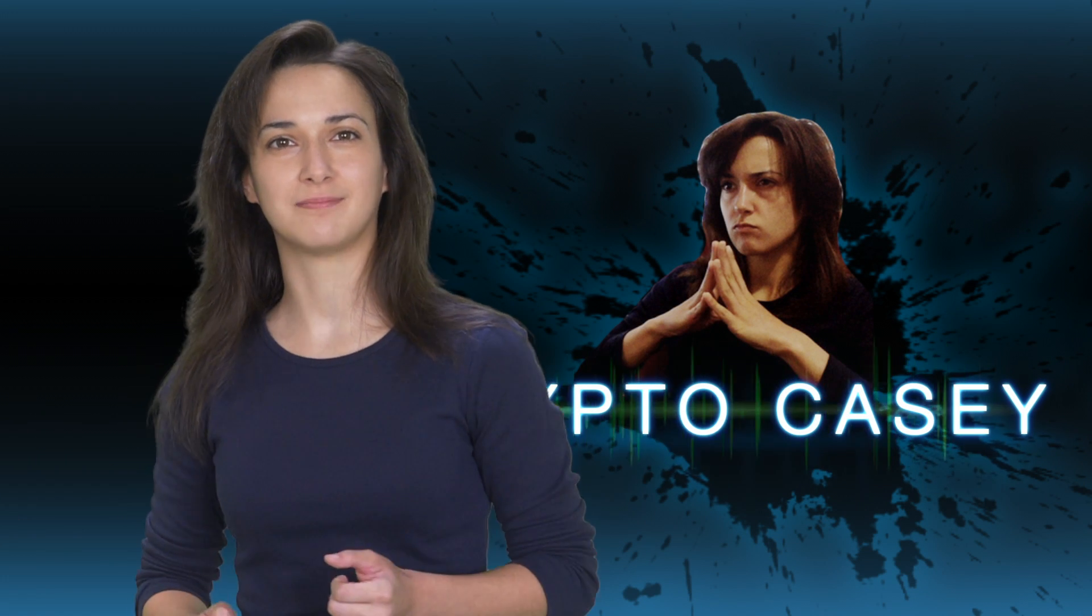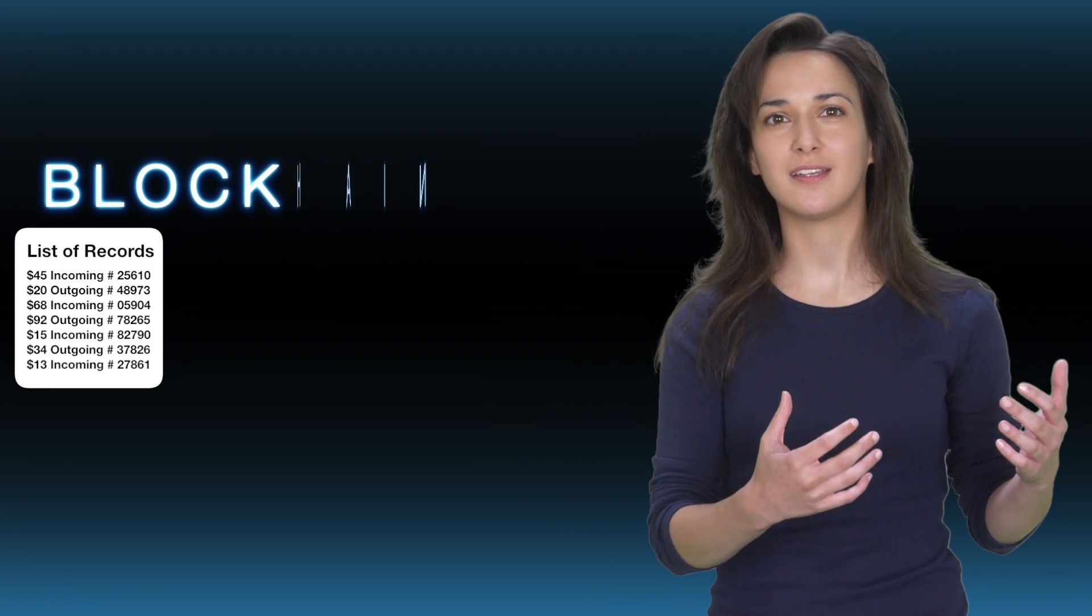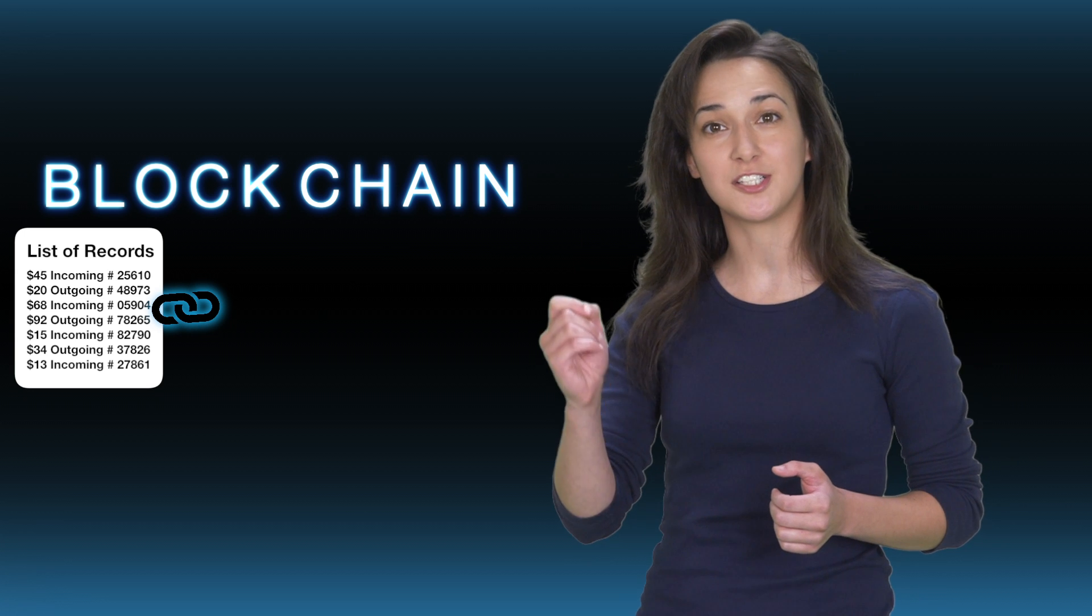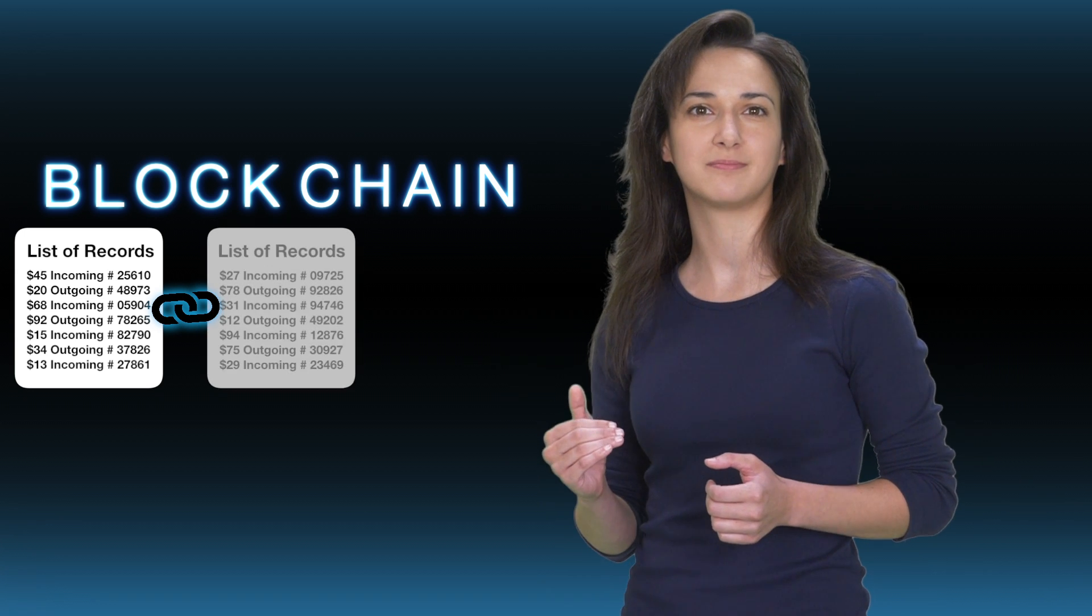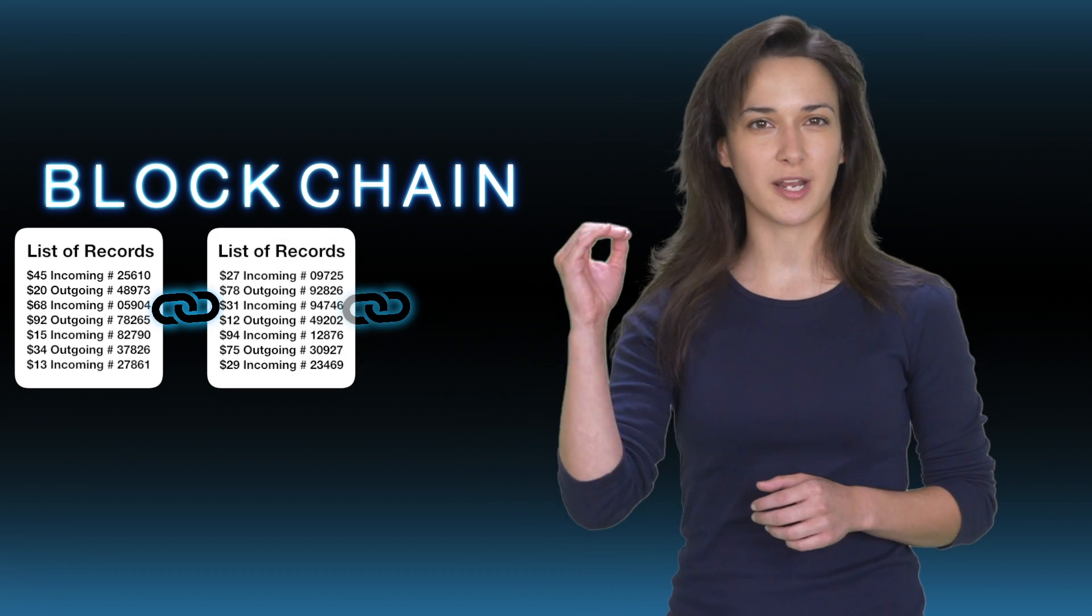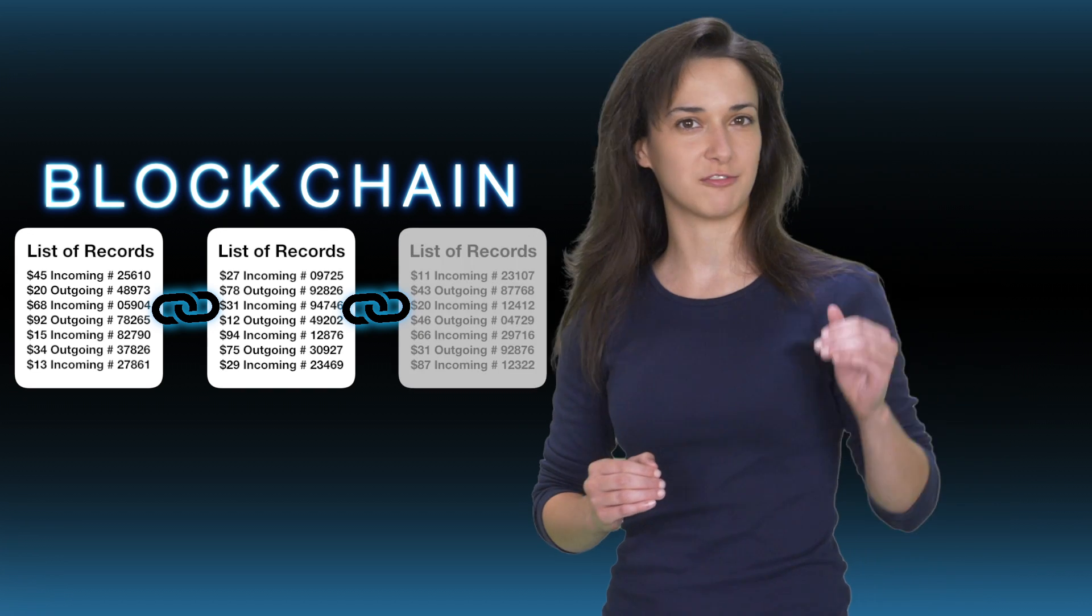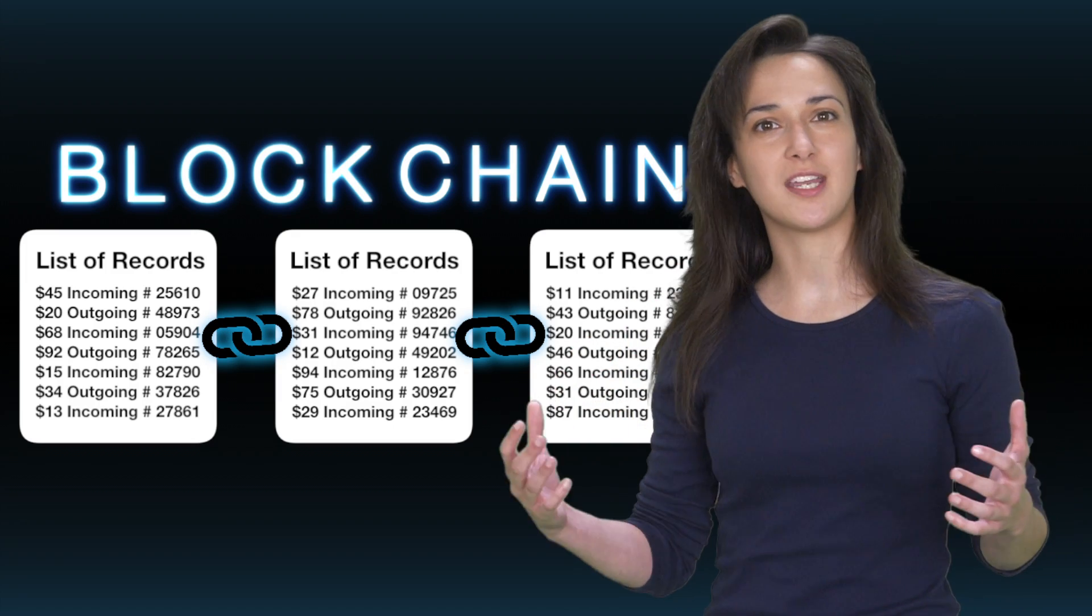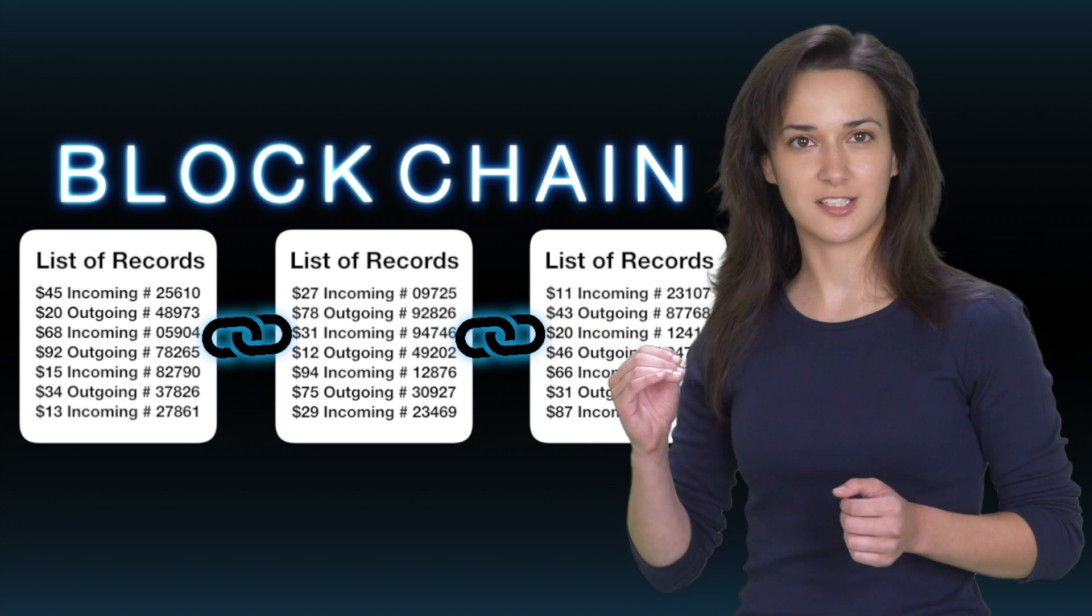What is blockchain? The word block is meant to represent a list of records, while the word chain is meant to describe the linked relationship between these lists of records. So imagine a list of records linked to another list of records. That's basically what the term blockchain describes - linked sets of records.